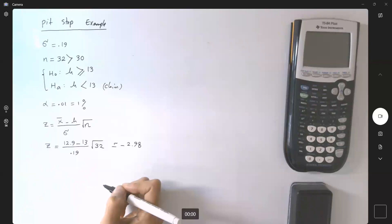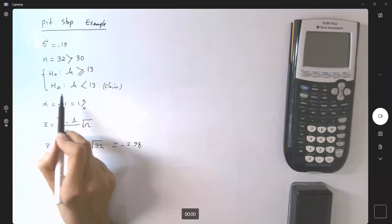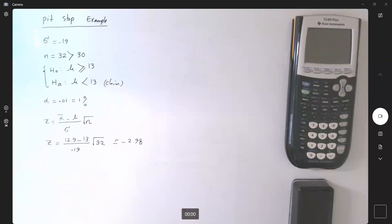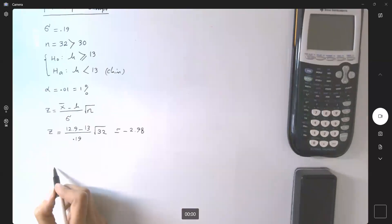Now the question is, what is the critical value? Well, here's my alternative hypothesis. Let's say we have a left tail graph. Let's take a look at this, left tail graph. This is your z, and this is your normal distribution.